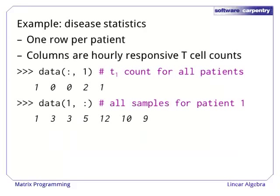Here is a long example of what we can do with array operations. Suppose we have been observing the progress of a disease in some test subjects. Each row of our array corresponds to one patient, and each column is an hourly count of responsive T-cells. This means that the first column of our data is the initial T-cell count for all patients, while the first row is all hourly samples for patient 0.